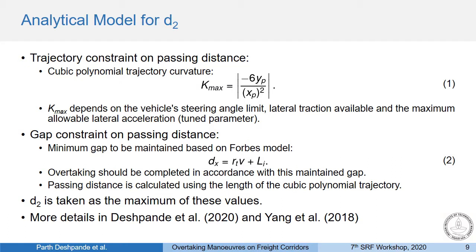Based on these differences, we propose an analytical model for one of the most significant parts of PSD, which is D2. While D1 can be obtained using a longitudinal acceleration model, D2 requires consideration of the overtaking trajectory of the vehicle. Literature shows that a cubic polynomial trajectory is the best approximation of a lane change manoeuvre and hence we use it here.